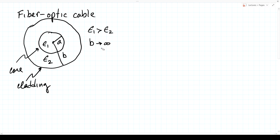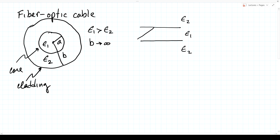Assuming the outer cladding goes to infinity — all we really need is that the fields are negligible at radius b, but for mathematical convenience we assume it goes to infinity. Taking an end-on view along the z-axis and then a side view, we see the core with epsilon 1 and the surrounding cladding. If we imagine the core is large, we can think of plane waves propagating along and reflecting off the sides at an angle theta 1; the angle of reflection equals the angle of incidence.